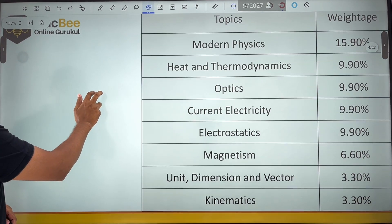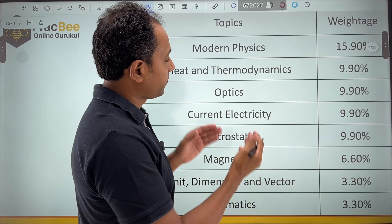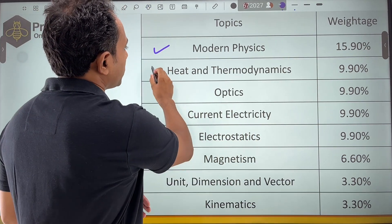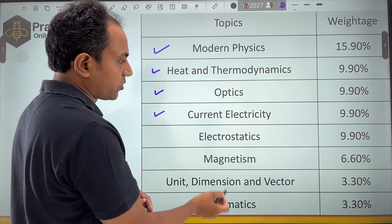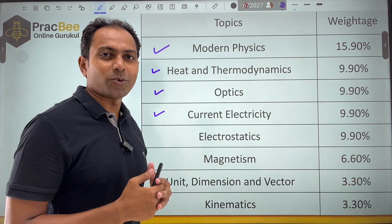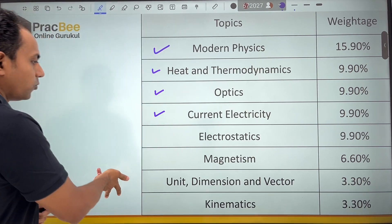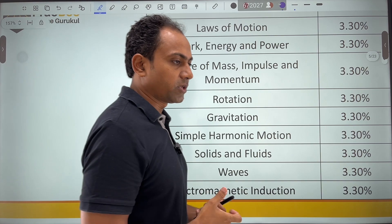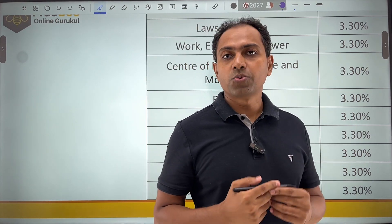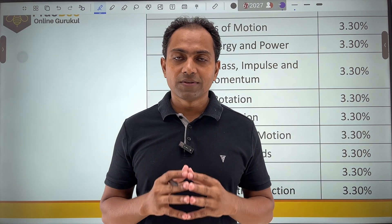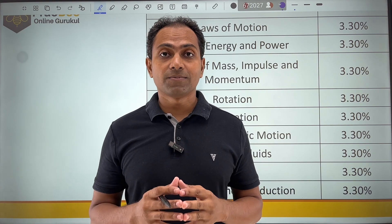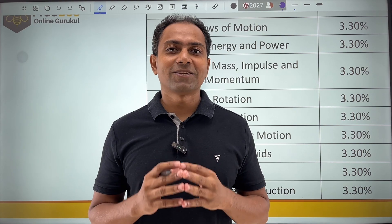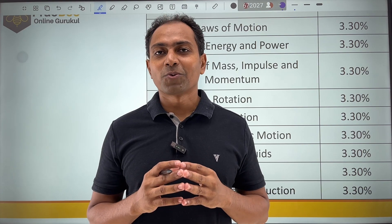If I just talk about physics, you can see that these many topics have different kinds of weightage. Modern physics is having the highest weightage, then thermodynamics, optics, current electricity. It has been noticed since last few years that in physics the paper is really easy, so it is highly advisable that you touch upon all the topics and do them at least in a shape that you are able to attempt all the questions.